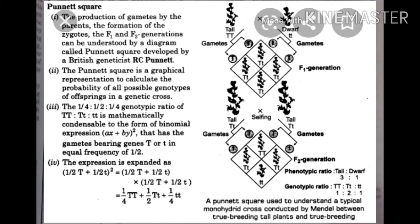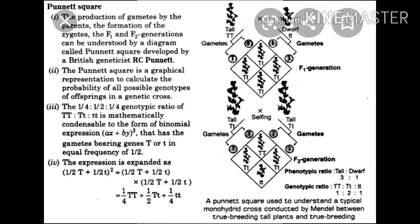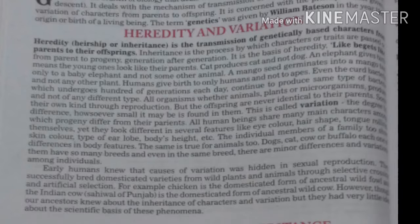All organisms — whether animal, plant, or microorganism — produce their own kind through reproduction. But offspring are never identical to their parents; some differences, however small, are found in them. This is called variation, meaning changes. The degree by which progeny differ from their parents is variation. All human beings share many characters among themselves, yet they look different in several features like eye color, hair shape, tongue rolling, skin color, type of earlobe, and body height.